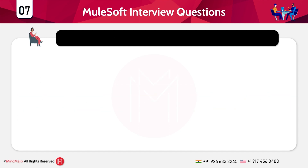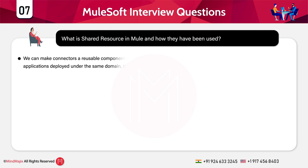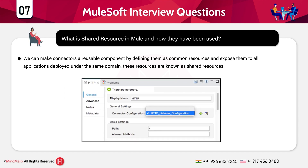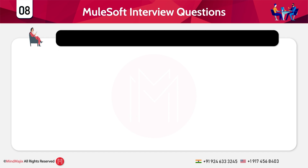What is a shared resource in Mule and how is it used? We can make connectors a reusable component by defining them as common resources and exposing them to all applications deployed under the same domain. These resources are known as shared resources. To use them, shared resources need to be defined inside a new domain project and then referenced in each of the projects meant to use the elements present inside it.